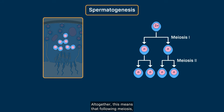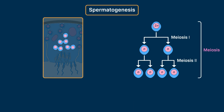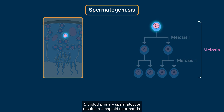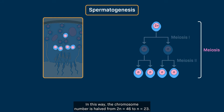Altogether, this means that following meiosis, one diploid primary spermatocyte results in four haploid spermatids. In this way, the chromosome number is halved from 2N equals 46 to N equals 23.